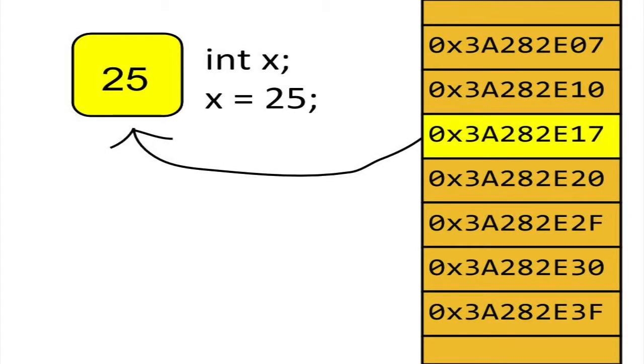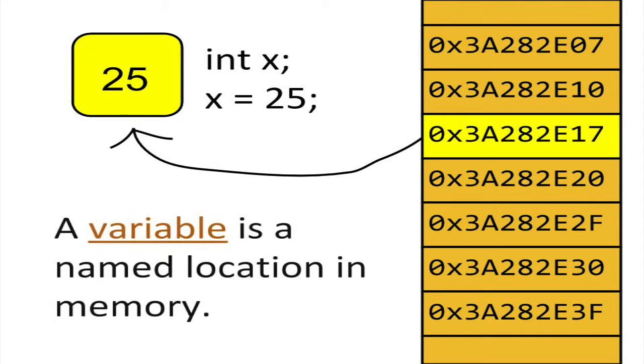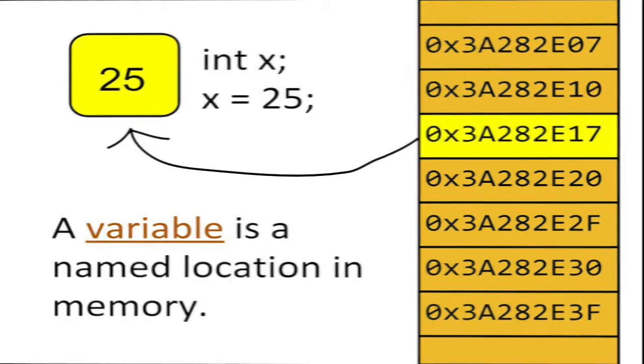Now let's look under the hood. Like all variables, x is a named space in memory. The real identity of x is not its variable name. Instead, the real identity of x is its unique address in RAM, or random access memory.